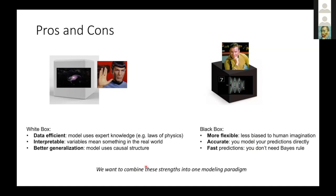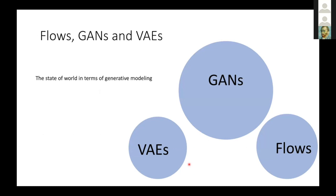What's the state of generative modeling? I would say GANs are perhaps the biggest field at this point, and then there's VAEs and flows, which are trailing. One of the things I'll try to do today is ask: what if I join these two bubbles together — maybe they become competitive with GANs.